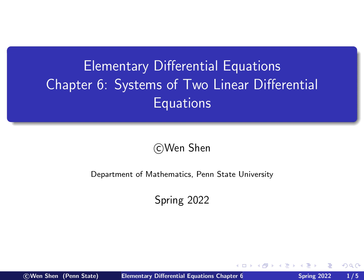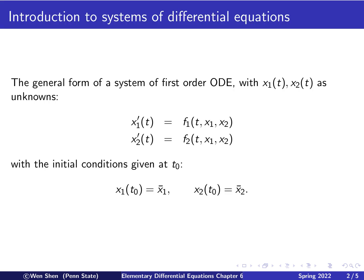The topic for the chapter is systems of two linear differential equations. Now let's begin with an introduction to the topic. We talk about systems of two differential equations. In general, a general form of a system of first-order ordinary differential equations for two unknowns, x1 and x2, can be written as follows.